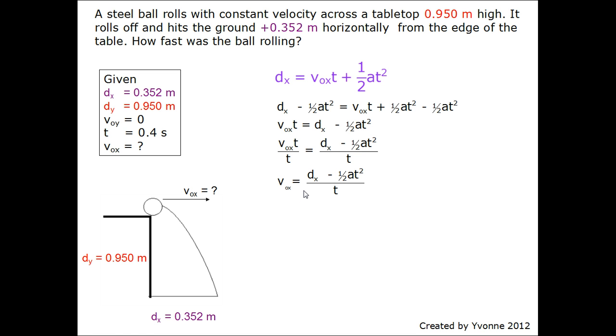We isolated the variable, so we get v₀x equals dx minus ½ times a times t squared over t. Then we substituted the values in, we got 0.352 meters minus ½ times 0 times 0.4 seconds squared over 0.4 second.